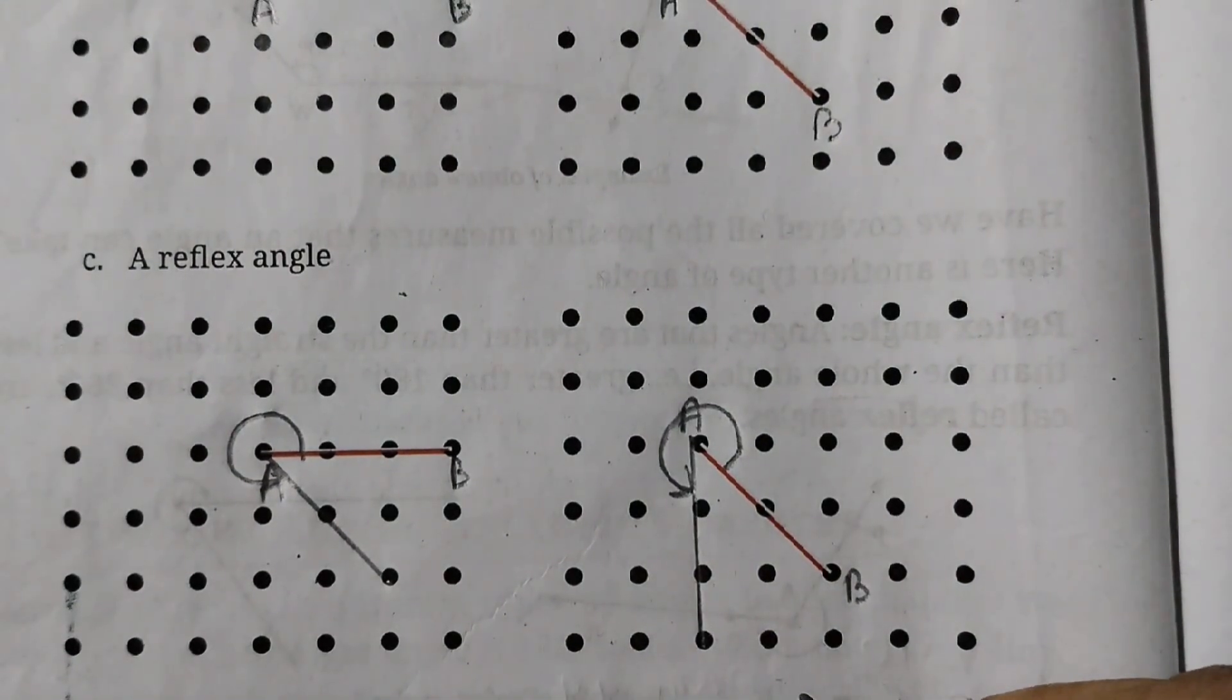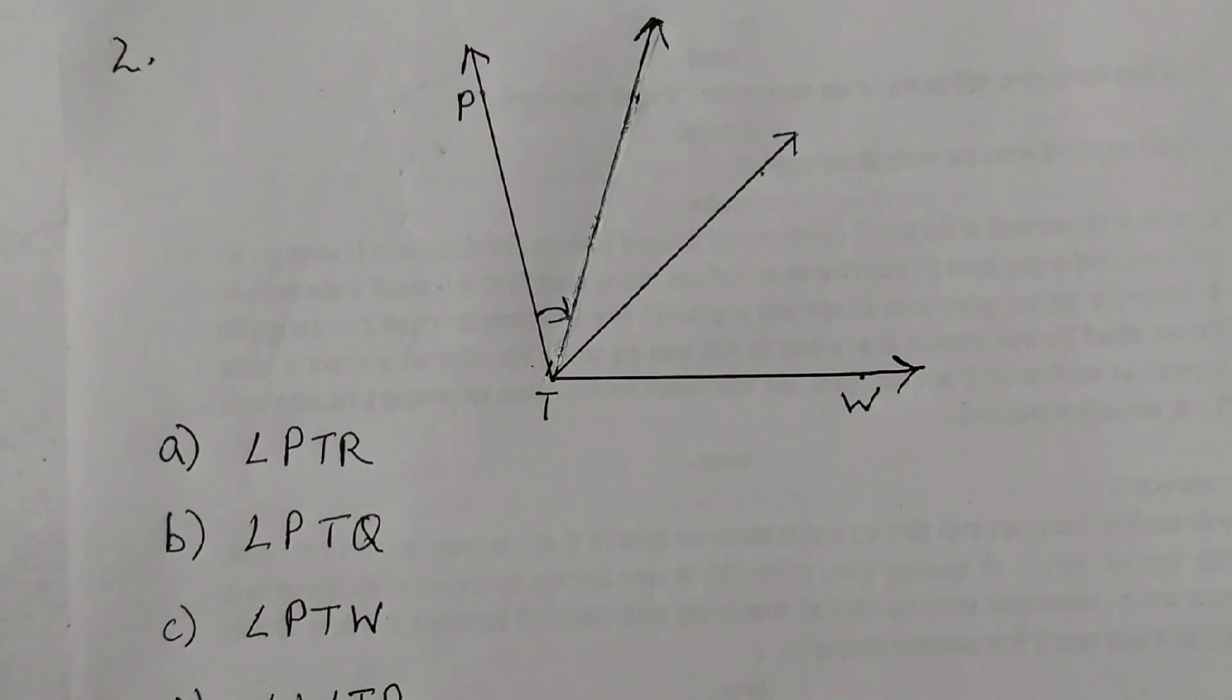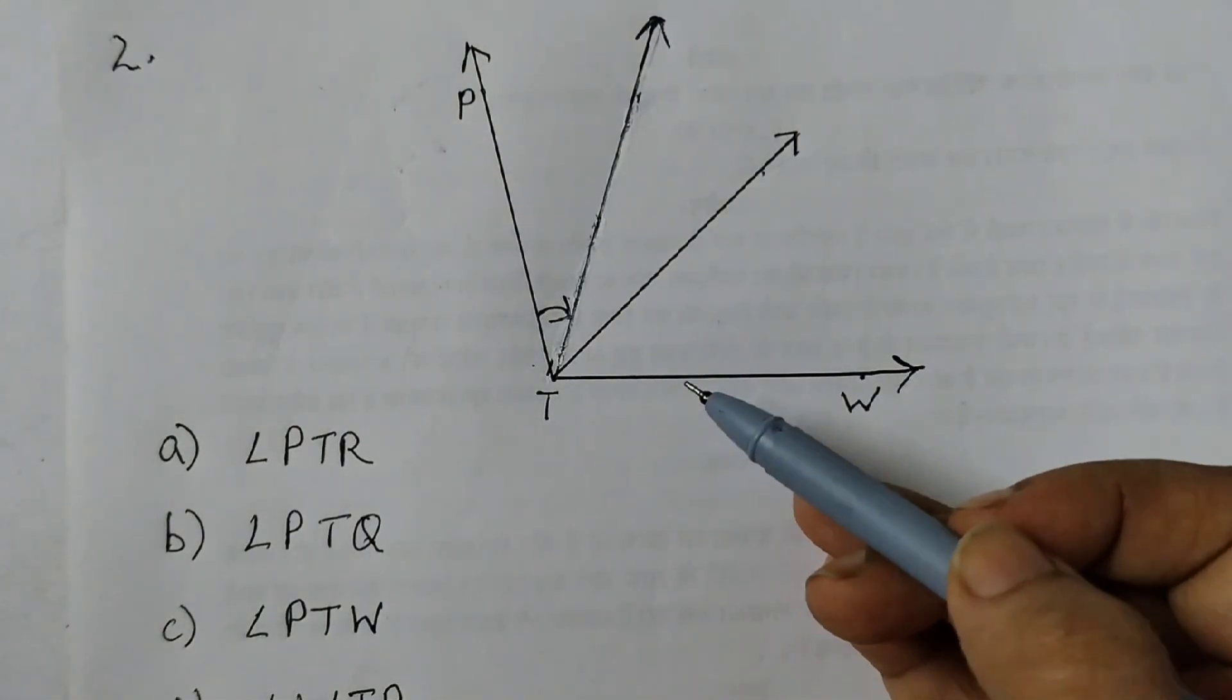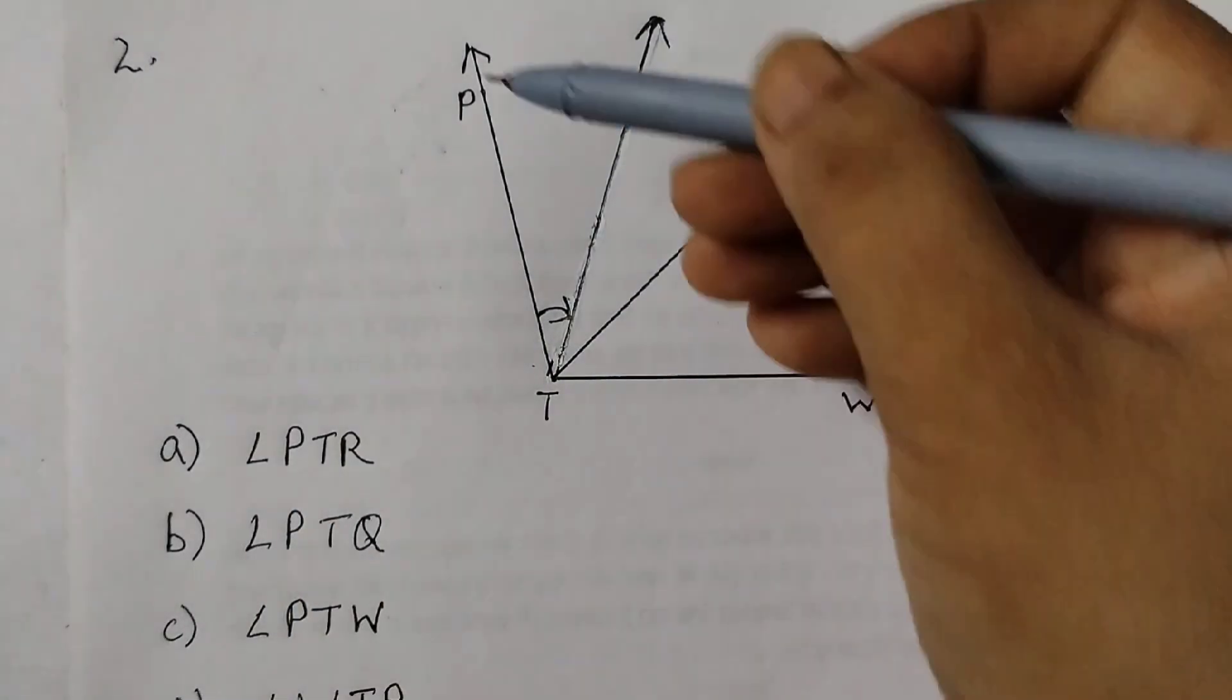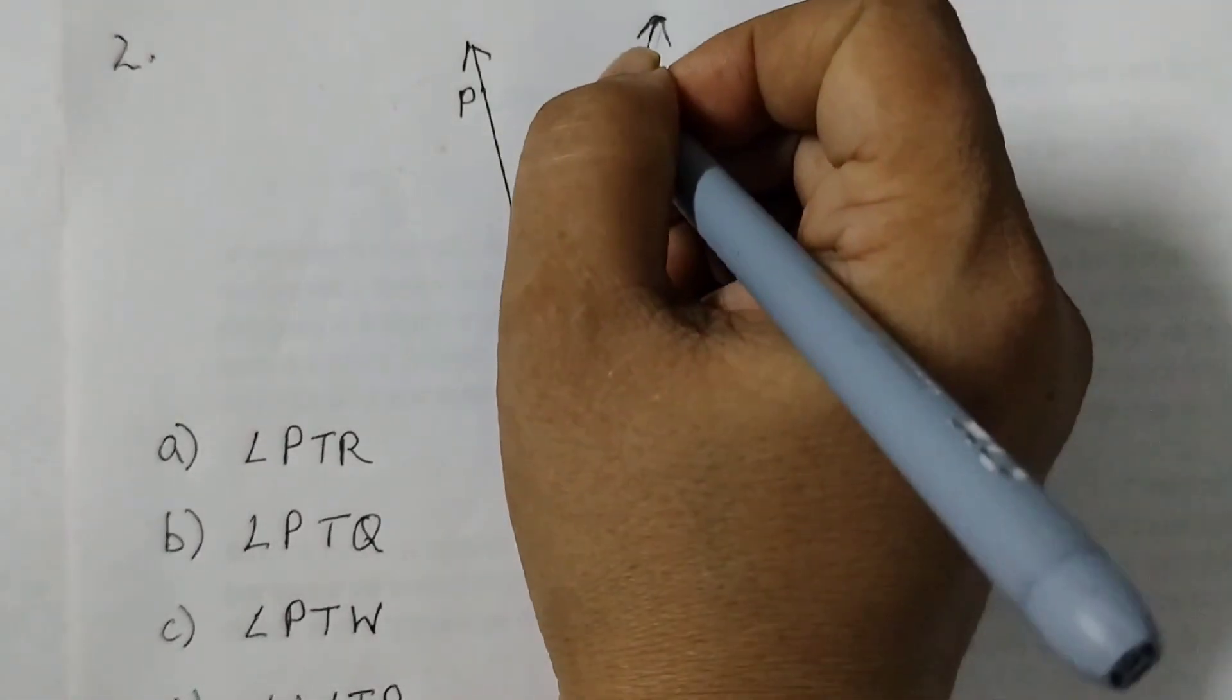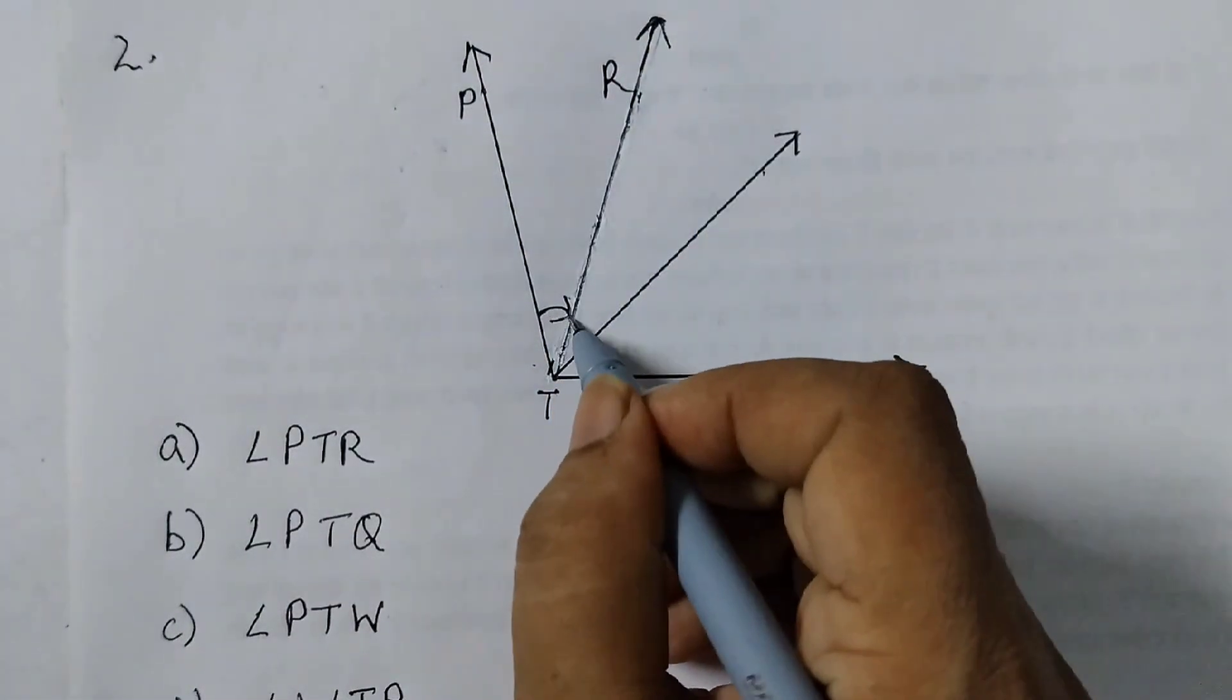Moving on to question number two. Question number two is use a protractor to find the measures of each angle, then classify each angle as acute, obtuse, right or reflex. So here we have to find out the angles. First angle is angle PTR. Angle P, T and R is given here, so we need to find this angle.